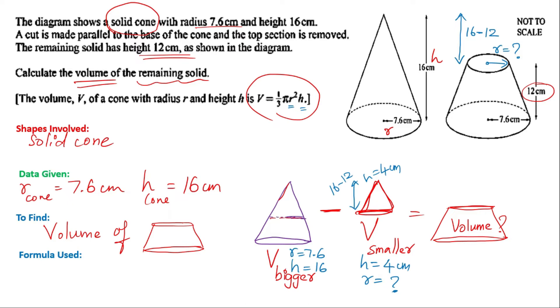If you have the radius, it's a direct solution — just substitute into the formula 1/3 π r² h. So let's see how we can find the radius of the cone that is removed.